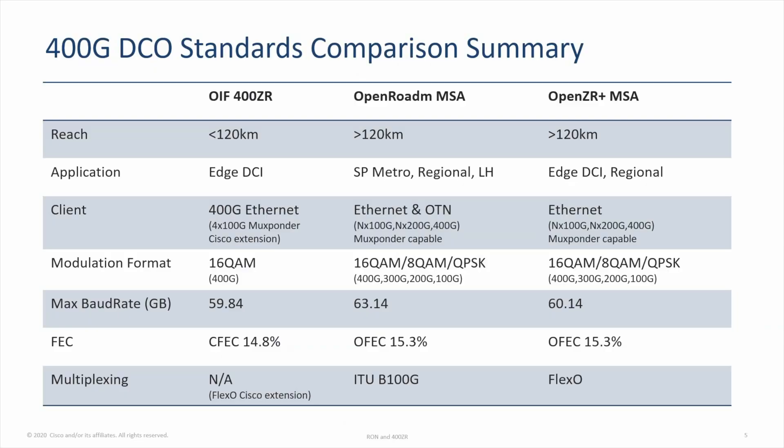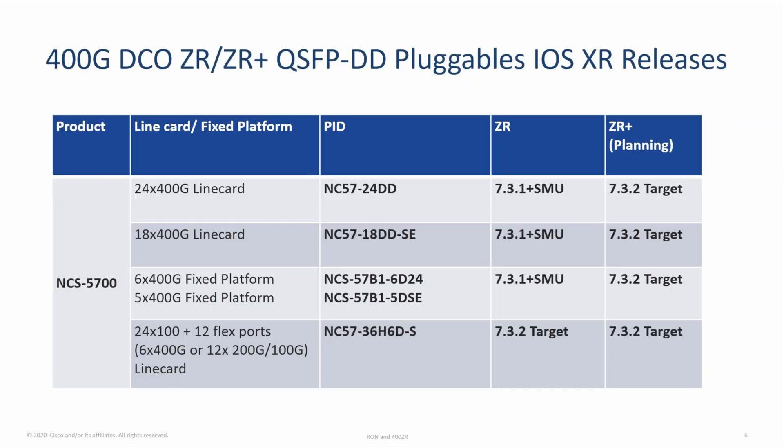This is a quick summary of the differences between standards. The audience could go through it in more detail later, together with the reference readings at the end of this presentation. Please note that the OIF 400ZR standard only supports 400GB transponder mode. However, Cisco does offer an extension for 4x100GB Muxponder mode. Cisco NCS 5700 series for both modular line cards and fixed platforms will support both ZR and ZR Plus pluggables.